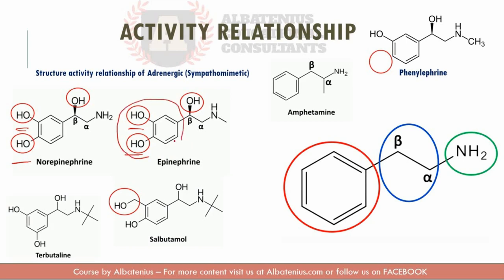A catechol is basically an aromatic ring with hydroxyl groups at positions one and two. If I take this out and replace it with the resorcinol structure, what's going to happen is the selectivity to beta-2 is going to increase, and the metabolism by the COMT enzyme — the catechol-O-methyltransferase — will decrease.